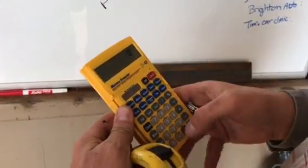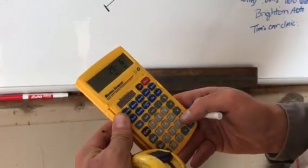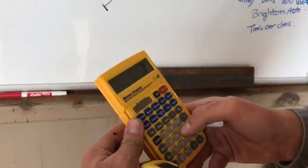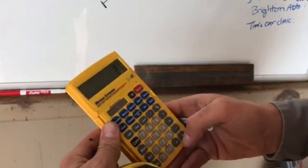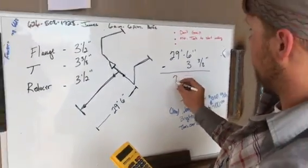Let me show you how to type that in. It's 29 feet 6 inches minus 3 inches 3/8. So right now we're at 29 foot 2 and 5/8 inches.